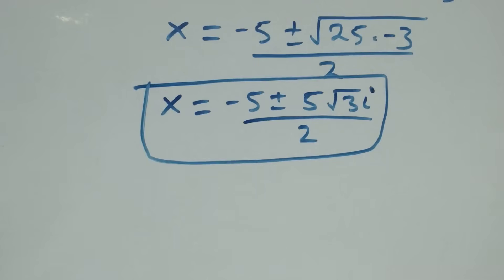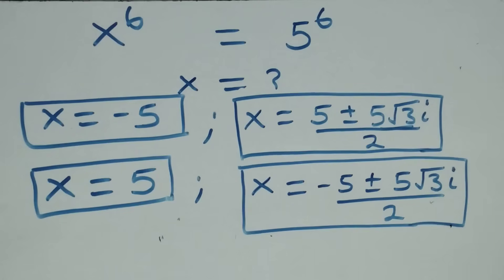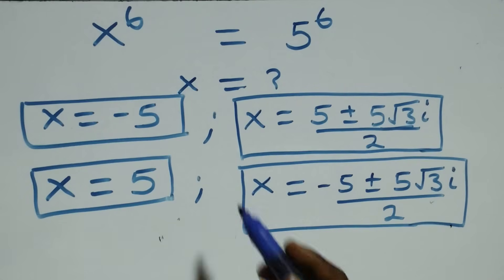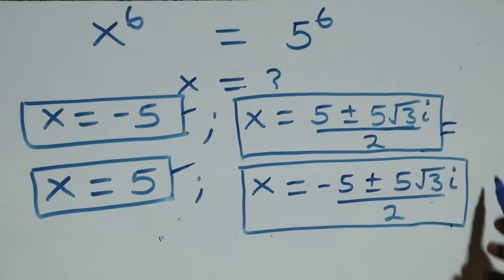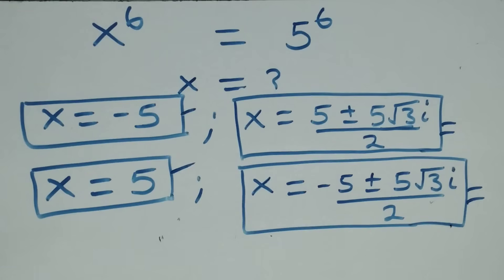Therefore, all together we have 6 solutions in this given problem: 2 real solutions (x equals minus 5 and x equals 5), 2 complex solutions from the sum of cubes case, and 2 complex solutions from the difference of cubes case. Thank you for watching — don't forget to subscribe for more videos, turn the notification bell on, share this video, and give a thumbs up.